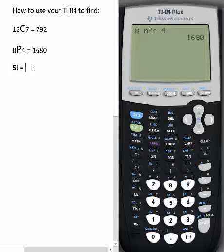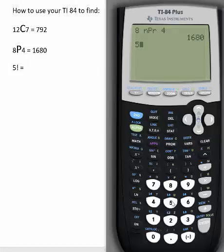5 factorial. 5 factorial is going to be 1 times 2 times 3 times 4 times 5, which is 120. Let's check.